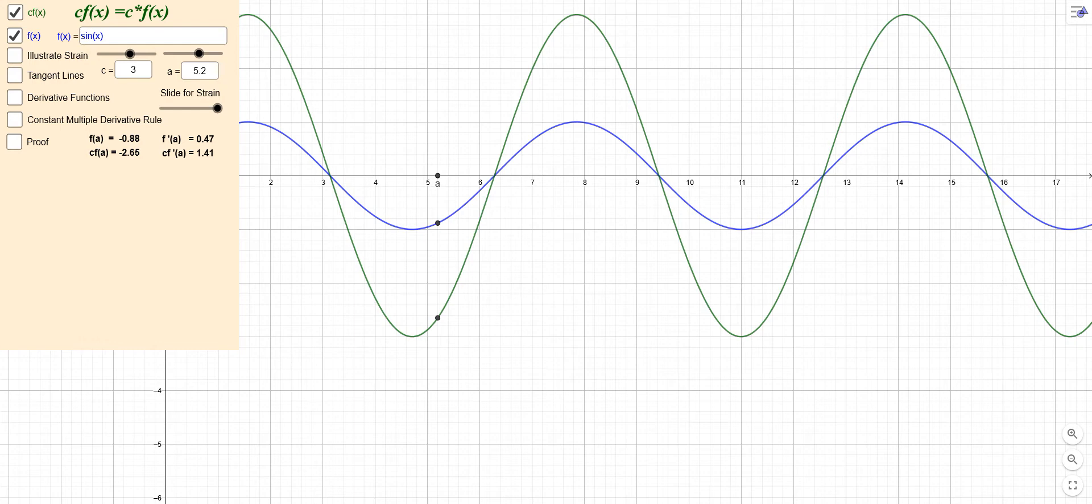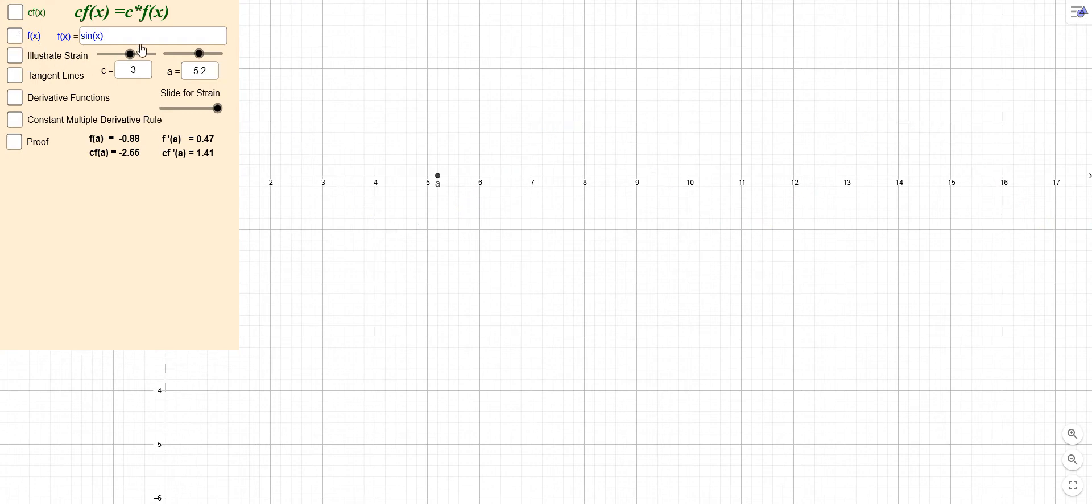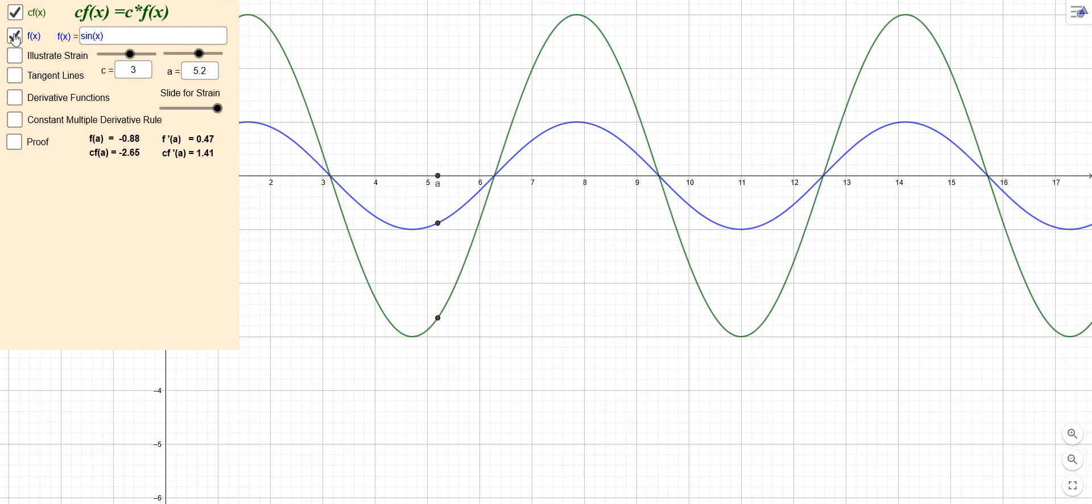Here I'm using a GeoGebra applet or activity that I've put together. In this one you can graph a function f(x) - I'm using sine of x - and then you can also graph c times that, so g(x) or we'll call it cf(x) is c times f(x). So the way you do this is you take everything here.